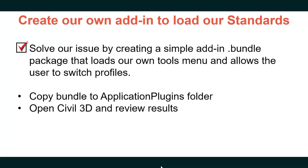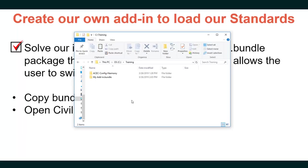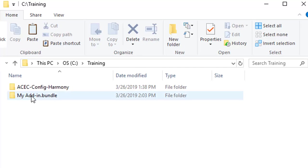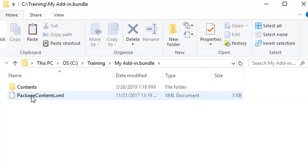We have now gone through the basic steps of creating our own add-in to load our own standards. The bundle solution loads our own tools, menus, and allows the user to switch profiles. The last step is to copy the bundle to the application plugins folder. Let's review what files are in the bundle: in my-add-in.bundle we have the packagecontents.xml, which tells the bundle what to load and when; a Contents folder with a Menu folder containing our CUIX ribbon file; and a Resources folder.